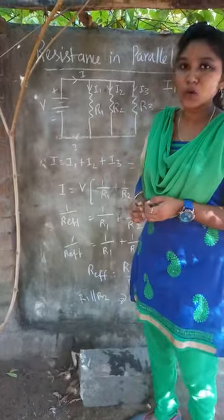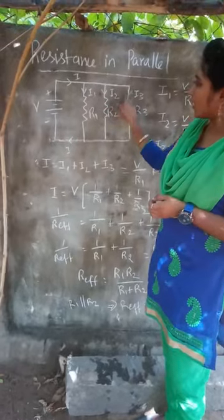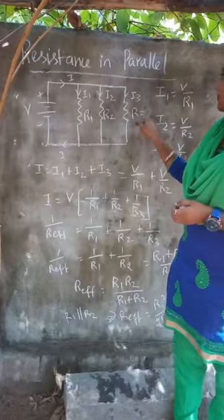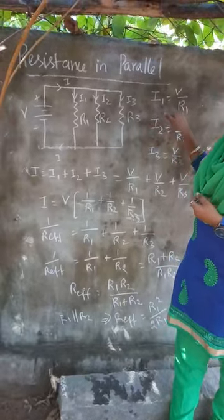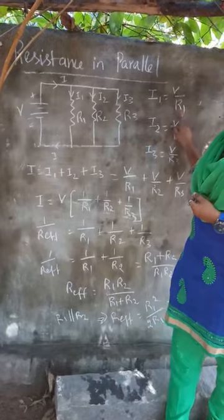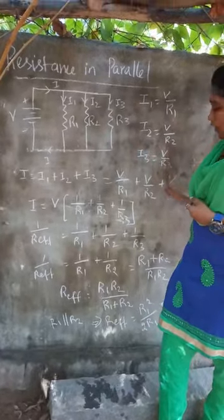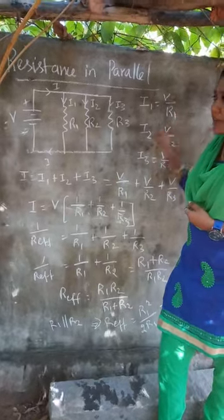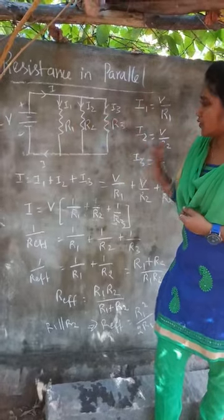Now we can apply Ohm's law. The currents I1, I2, and I3 are found using I = V/R. So I1 = V/R1, I2 = V/R2, and I3 = V/R3. Here you should not take V1, V2, V3 — because voltage is the same across all resistances.